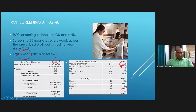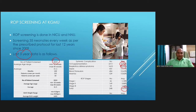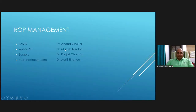At KGMU, we have been screening for ROP for the last 12 years, and for the last three years we have detailed data. We screen more than 1000 patients per year — roughly 100 patients per month. We have a favorable incidence of just 6.47% ROP among all screened patients, which is at par with figures from the rest of the world.